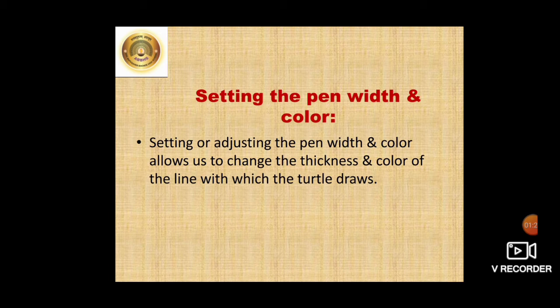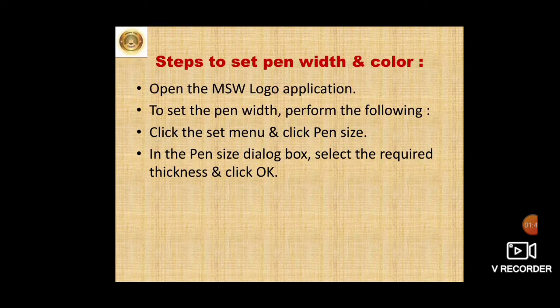Now, setting the pen width and color. Setting or adjusting the pen width and color allows you to change the thickness and color of the line with which the turtle draws. Steps to set pen width and color: first, open the MSW Logo application. Second, to set the pen width, click the Set menu and click Pen Size. In the Pen Size dialog box, select the required thickness and click OK.